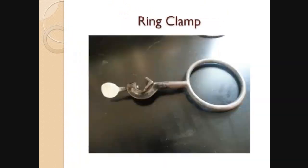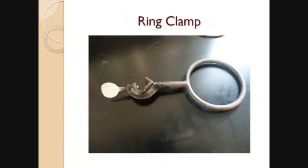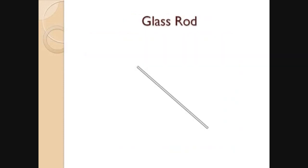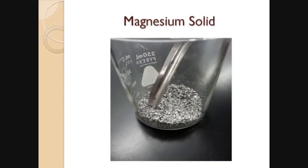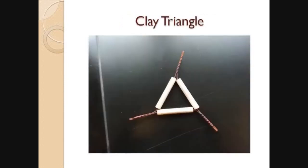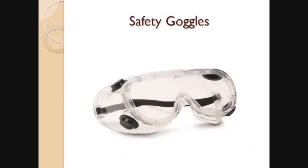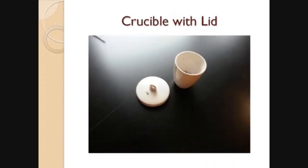The materials we are going to use are: electronic balance, laboratory burner, ring clamp, crucible tongs, glass rod. We are not going to use magnesium turnings — we are going to use small stones of magnesium. Also: sparker, clay triangle, goggles, retort stand, and a clean crucible.